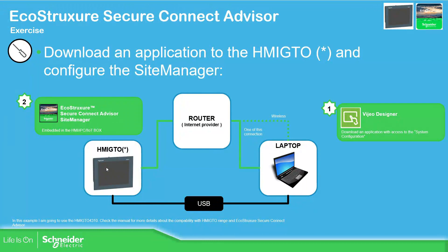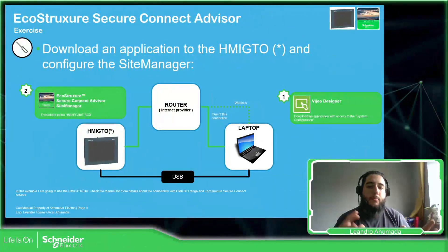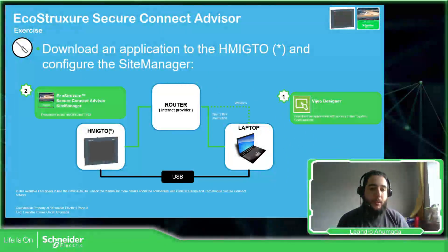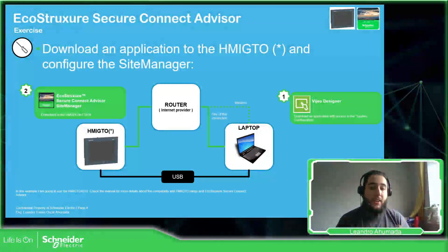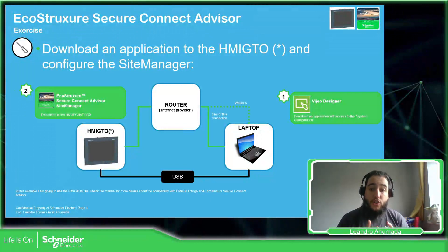In order to do that, what we need to do is download our application in Vijeo Designer to the HMI, so we can get access to the configuration of the HMI. This process will be similar to what we already did with the EcoStruxure Operator Terminal Expert with the HMI ST6. Now we're going to do something similar but with the HMI GTO.